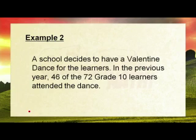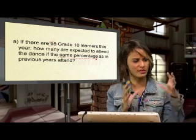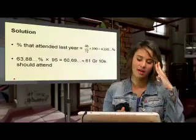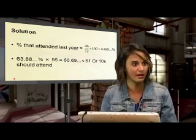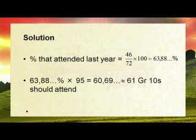A school decides to have a Valentine's Day dance. In the previous year, 46 out of 72 grade 10 learners attended the dance. If there are 95 grade 10 learners this year, how many are expected to attend if the same percentage as the previous year attended? We need the percentage: 46 over 72 times 100 gives us 63.88% — that is the percentage of children that attended last year.